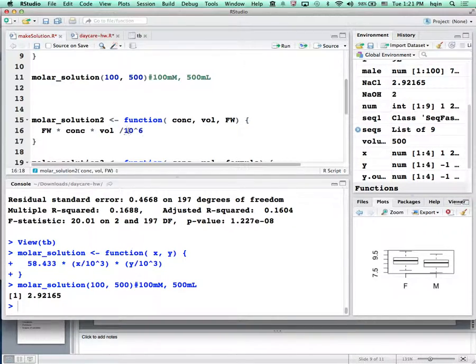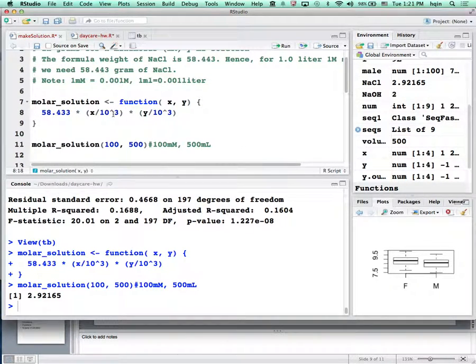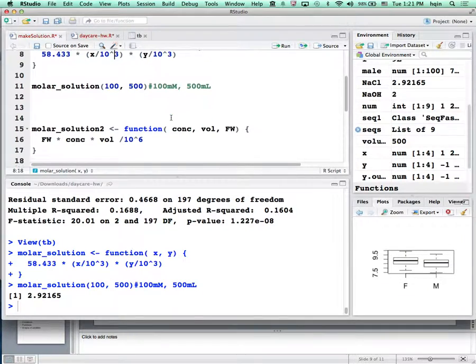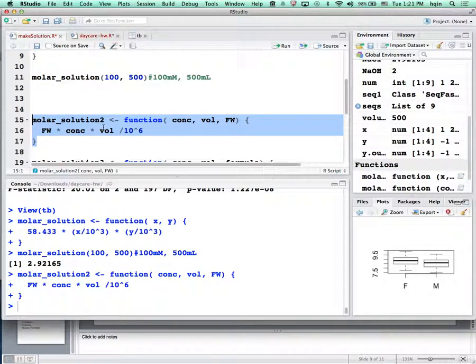I rewrite the function: formula weight times concentration times volume divided by one million. It's the same thing—divided by a thousand twice means divided by a million. The formula hasn't changed, just written differently.